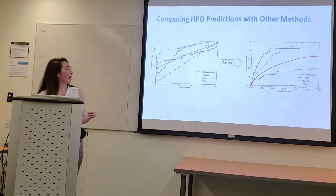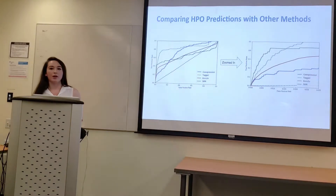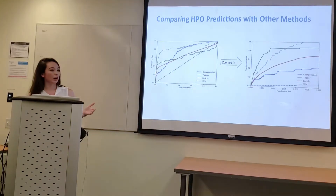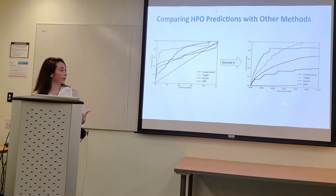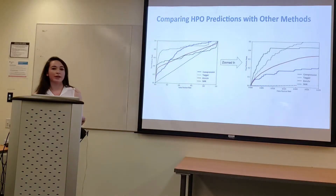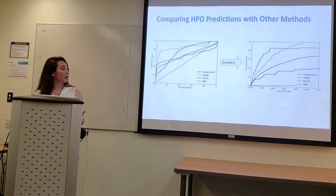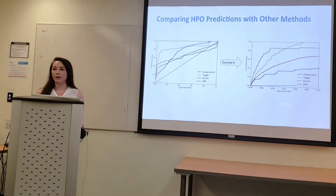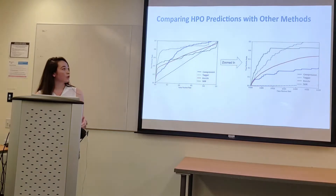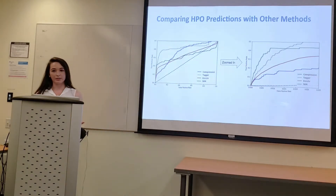Here the SVM is compared with other prediction methods currently implemented in GeneShot. Overall, Tagger performs best with the highest area under the curve. However, when you zoom in, you can see that the SVM actually outperforms the rest of the prediction methods at the top. This is important because in a wet lab only the top predictions will be tested, so being accurate in the beginning is the most important part, even though Tagger overall outranks them.